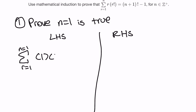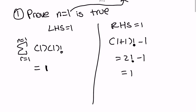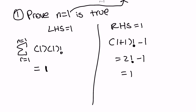That would turn into one times one factorial. One factorial is one, so it's overall just one — that's my LHS. For the RHS, I plug in n equals one, so that turns into one plus one factorial minus one, which is two factorial minus one, which equals one. Our RHS is equal to our LHS. Remember to plug n equals one into the correct expression — that's a mistake a lot of people make and it's good to avoid that in the exam.